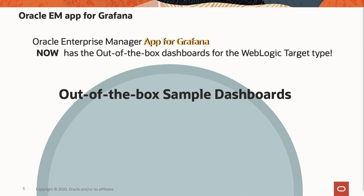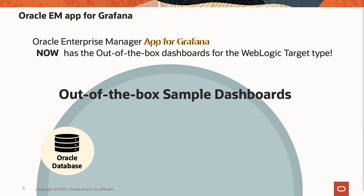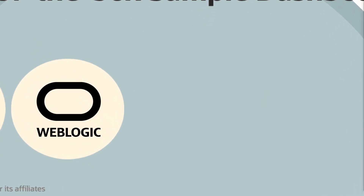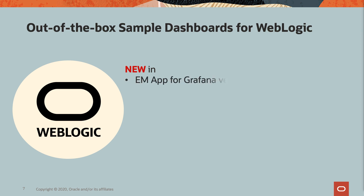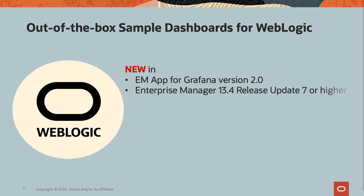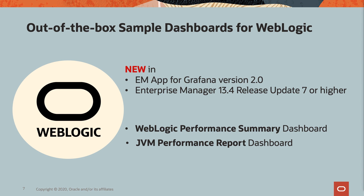We also have out-of-the-box dashboards for different Enterprise Manager target types — those are the Database Performance and WebLogic Performance dashboards. The WebLogic dashboards are new in EM App for Grafana version 2 with Enterprise Manager 13.4 release update 7 or higher. We have two pre-configured sample dashboards: WebLogic Performance Summary and JVM Performance Report dashboards.